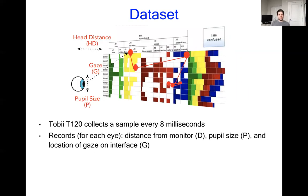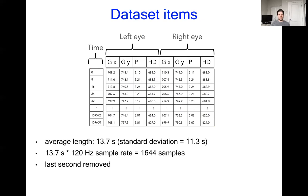The Tobii T120 collects a sample every eight milliseconds, which includes a measure for the head distance, the gaze, and the pupil size. And what we get over this is a matrix where each row represents a sample separated by eight milliseconds, and the columns are the gaze, pupil, and head distance for each eye.